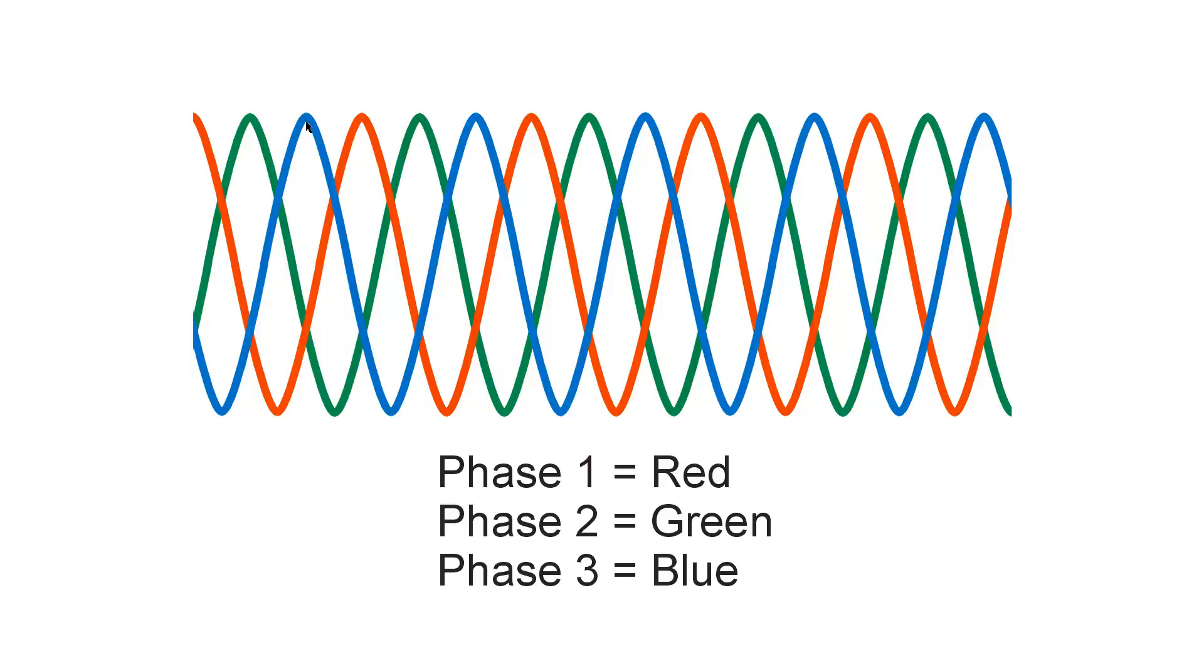And the blue wave then is equivalent to leading phase one again, the red wave, by 120 degrees or a third of a cycle. So you have three identical alternating current sine waves spaced equally three ways around the 360 degree phase cycle.